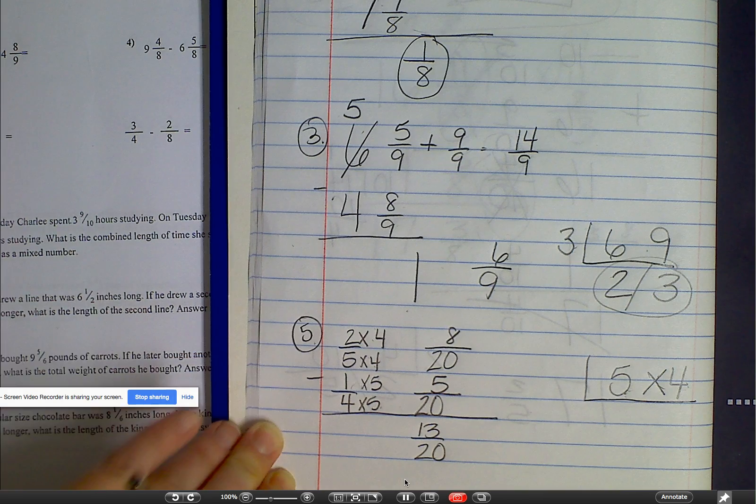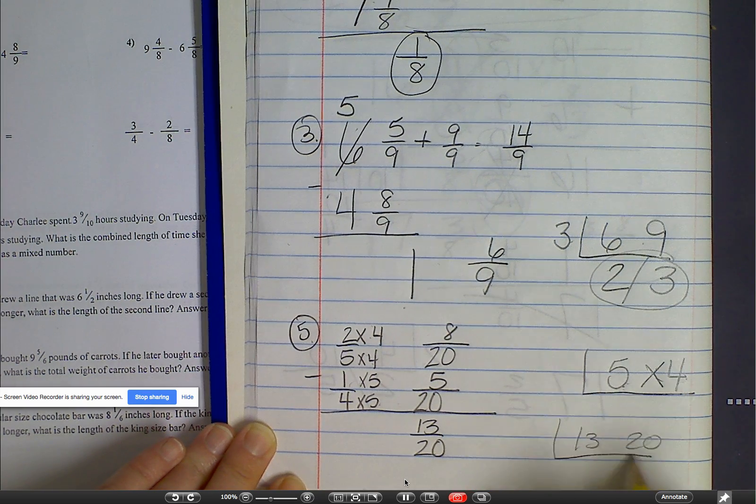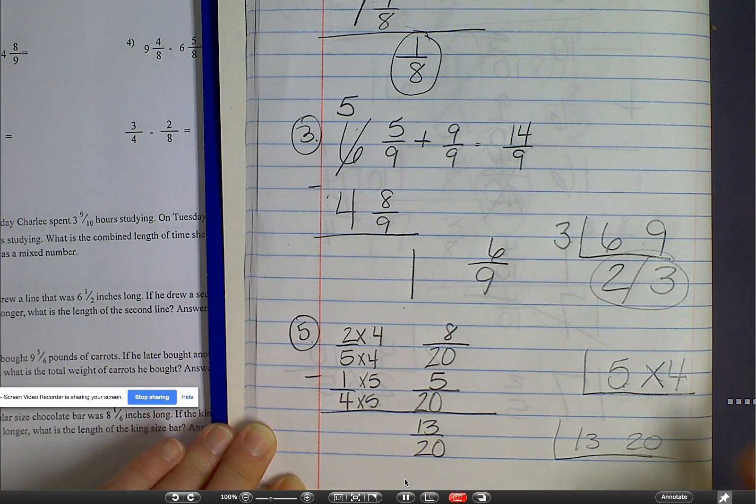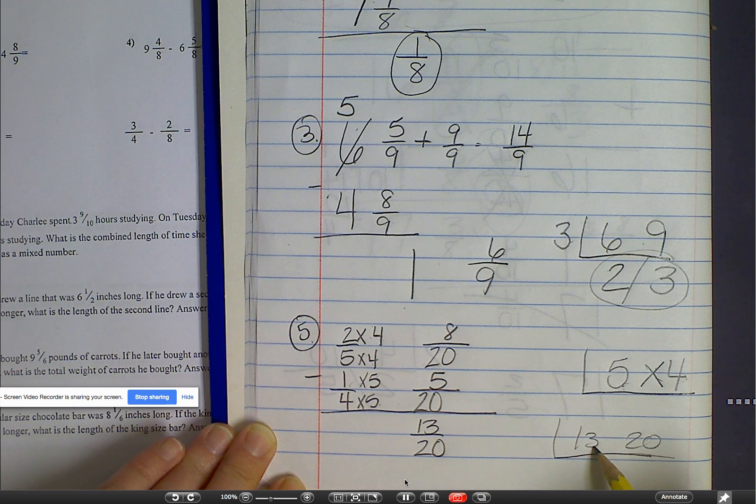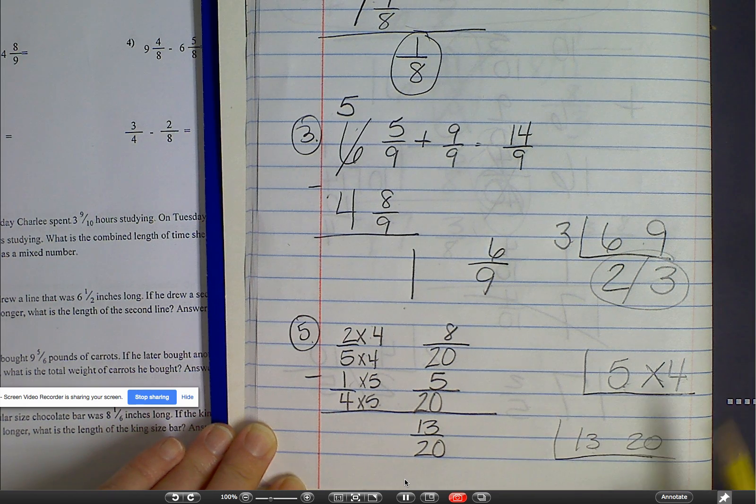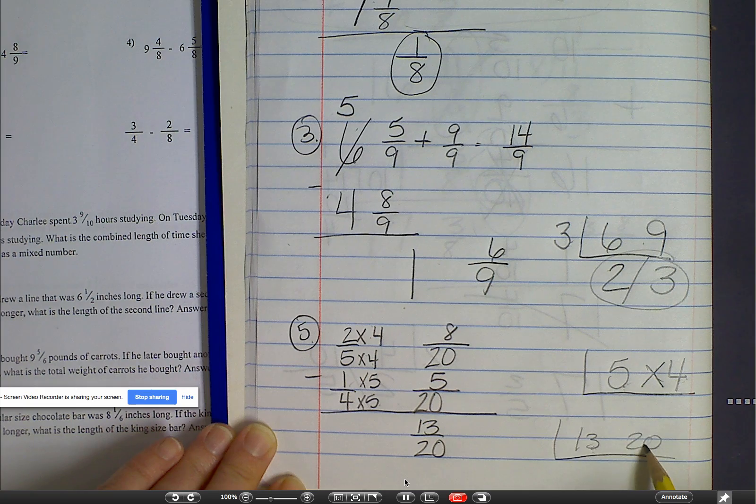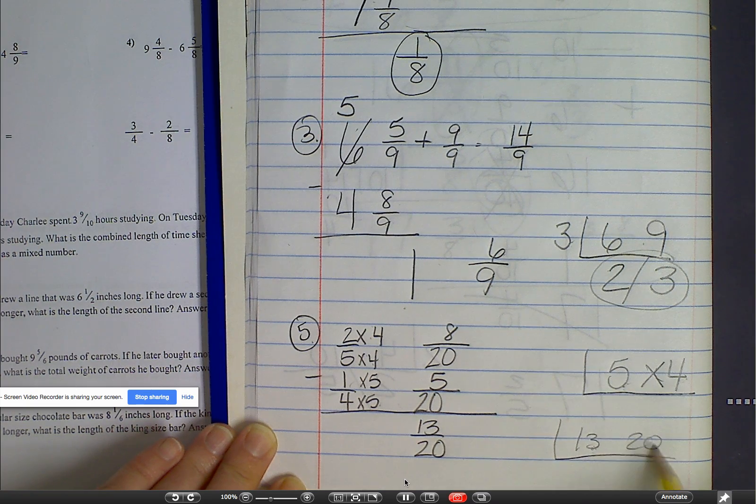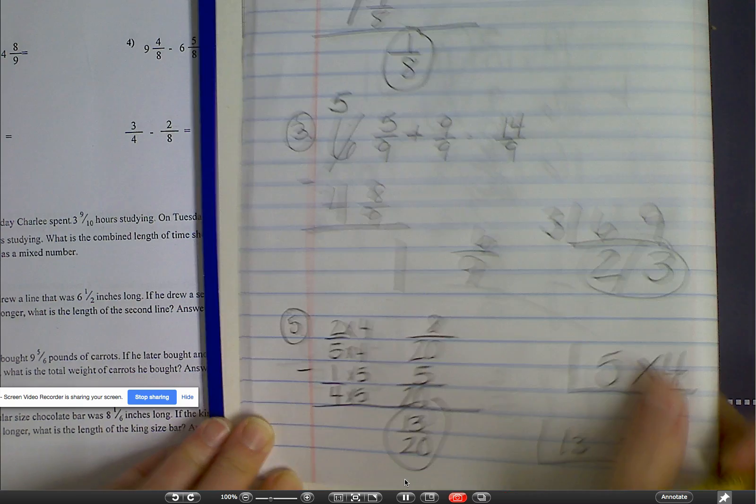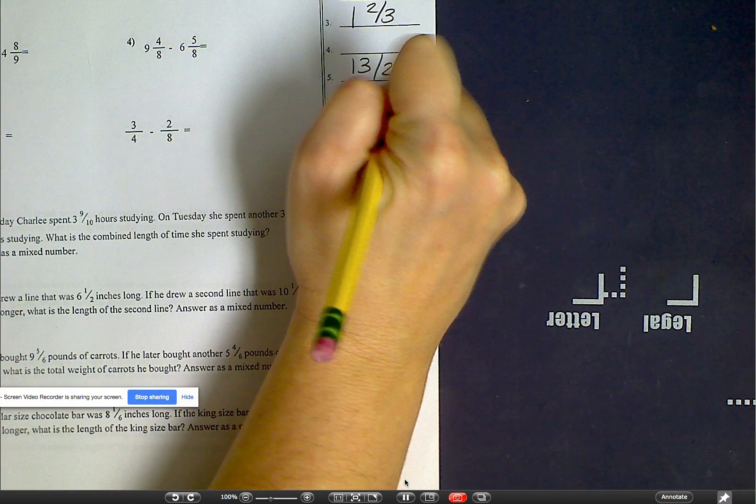But look at this. So I'm going to put this in the ladder to see if there's anything that will go into this to see if I can reduce. Thirteen is a prime number because there's no two other factors other than one and thirteen that will go into thirteen. So here's what you have to do. If this number is prime, then you have to say if thirteen doesn't go into twenty equally, which it doesn't, then you're done. So the answer to number five is thirteen-twentieths.